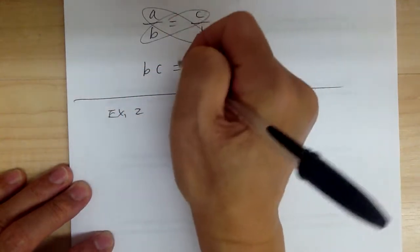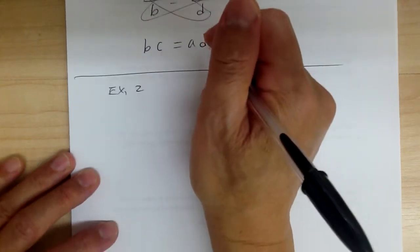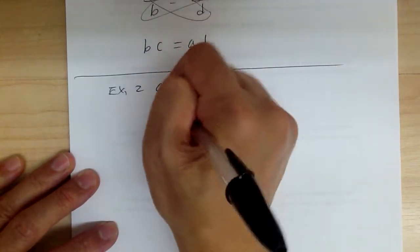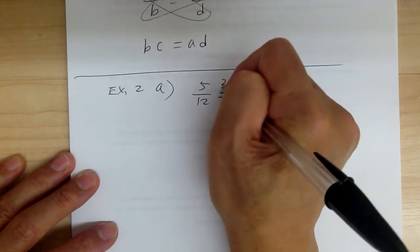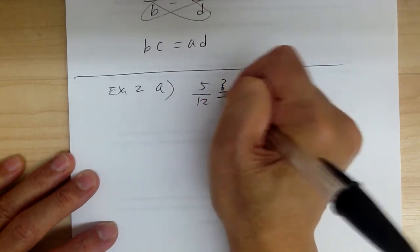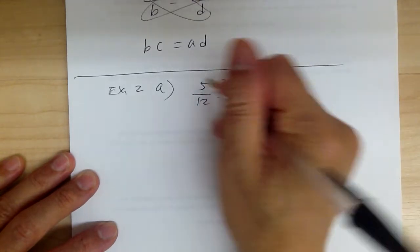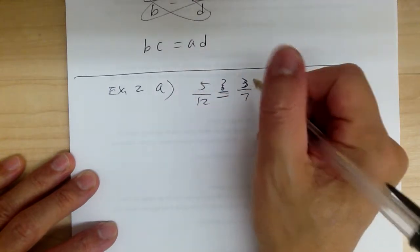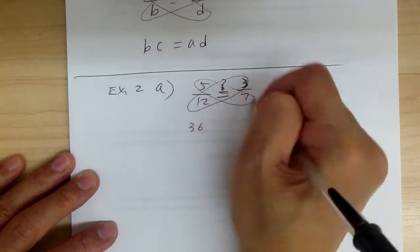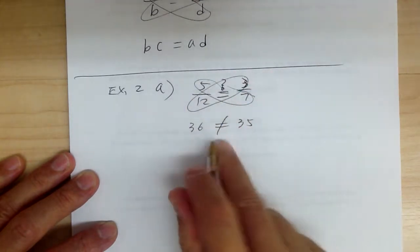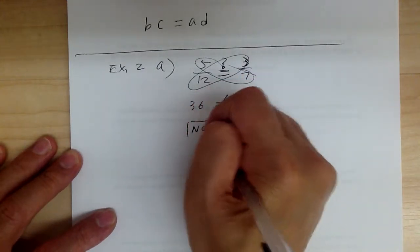Let's go to example two. You can use cross multiplication to check if ratios are equal. It says: do the given ratios form a proportion? Part A: 5 over 12 — does it equal 3 over 7? If they are equal, the cross products should be equal. Cross multiplying gives 36 on one side and 35 on the other. So they are not equal — part A is not a proportion.